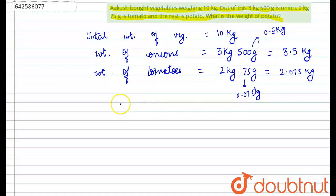So, now we have to find out the weight of potato. We need to add these first and subtract the sum from 10 kg.